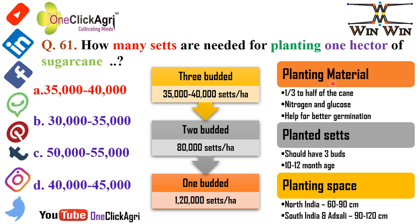The planting material should have one-third to half of the cane and it contains nitrogen and glucose, which help for better germination. The planted seeds should have three buds and the age of planted seeds should be 10 to 12 months. Planting space in North India is 60 to 90 cm, and in South India — specifically for Adsali sugarcane — it is 90 to 120 cm.